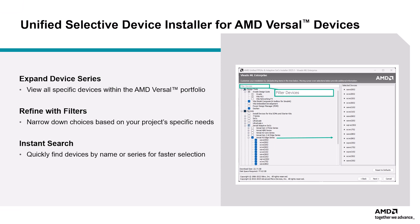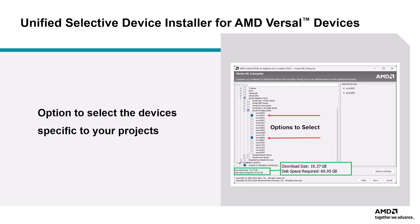Once you've selected a series, you can easily expand it to view all the specific devices within that series, displayed in the Selected Device pane. You can then filter further based on your project's specific requirements, ensuring you find the perfect device that meets all your needs. There is now an option to select specific devices within a series, which helps reduce the download size further and allows for a more flexible selection based on user requirements, making the process more efficient and tailored to your exact project specifications.